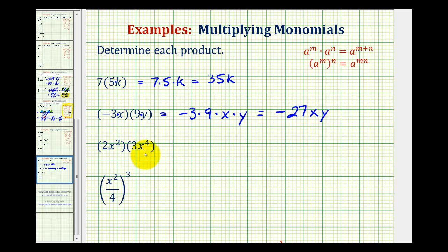And the same thing is true for the third example. Two x squared means two times x squared, times three x to the fourth, which means three times x to the fourth. And so we can change the order of this multiplication. We would have two times three times x to the second, times x to the fourth. So we have six. And then for x to the second times x to the fourth, since the bases are the same and we're multiplying, we'll add the exponents. So we'd have x to the sixth.